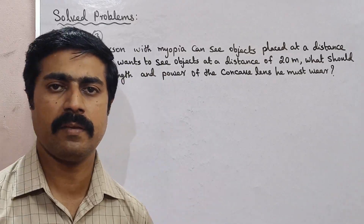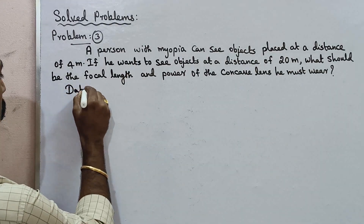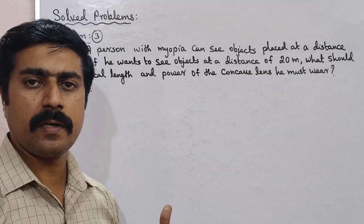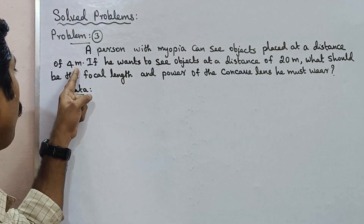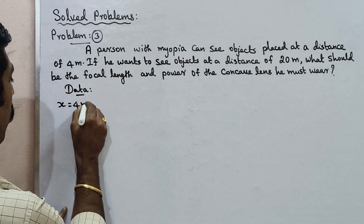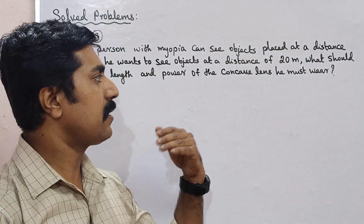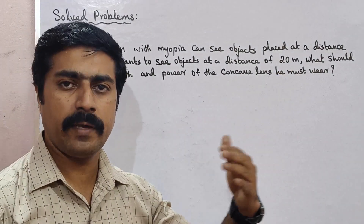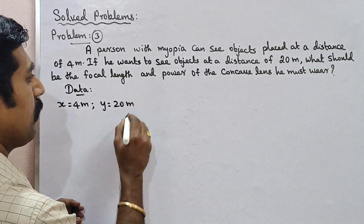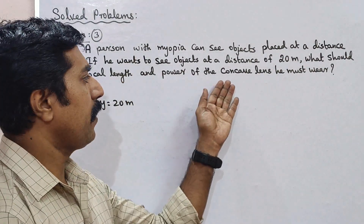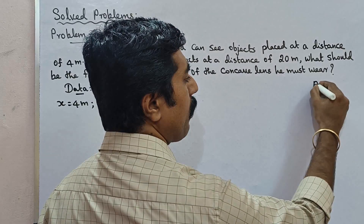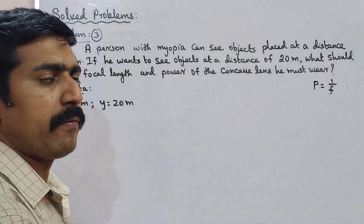So in this problem, myopia is the topic. First, the data is given: nearby objects can be seen clearly up to 4 meters — that distance, which we call x, is equal to 4 meters. The desired distance is 20 meters, which we call y. We need to calculate the focal length of the concave lens. The formula is: power of lens equals reciprocal of focal length.